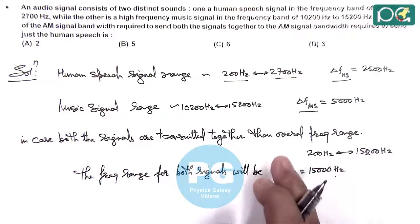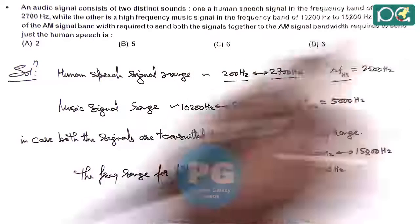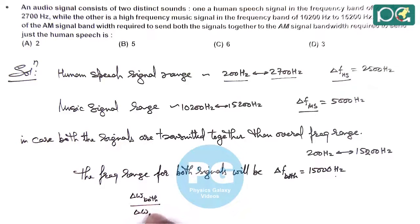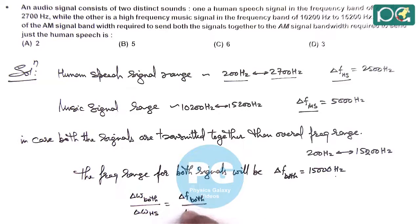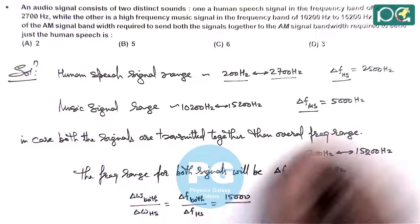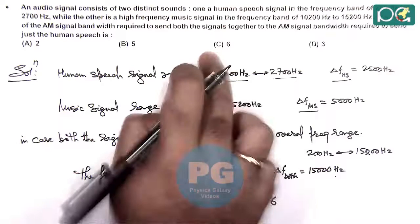Now if we calculate the bandwidth required to send both the signals together relative to the bandwidth required to send only the human speech, the ratio is delta f for both divided by delta f for only human speech. This gives us 15000 Hz divided by 2500 Hz, which equals 6, matching option C. So our answer to this question is option C.